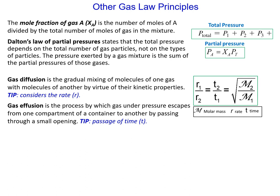What are some other gas law principles? The mole fraction of a gas is the number of moles of the gas, here A, divided by the total moles of gas in the mixture. In other words, you would add up all the moles of all the gases, take the gas you're interested in and put it on top, divide it by the total, and you will get a mole fraction expressed as a decimal, not as a percentage.